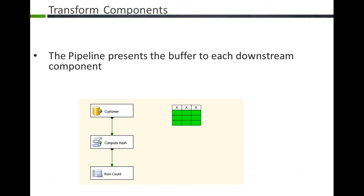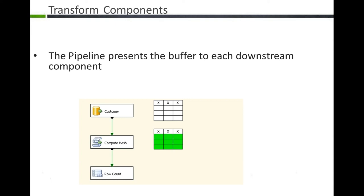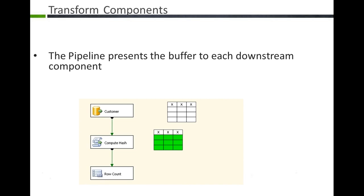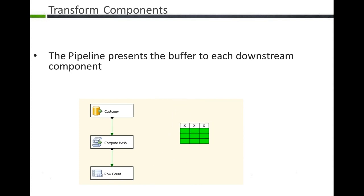A synchronous component means I scoop a bucket out of the stream, pass it to the next guy who does something with it, passes it on down. If everything is synchronous, we'd only be using 10 megs of buffers for each component — 30 megs of data can be worked on at any point in time, which is pretty good. That's 10 megs or 10,000 rows for each bucket, whichever comes first, and that can be adjusted.